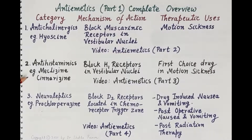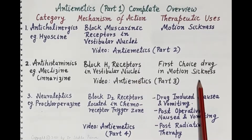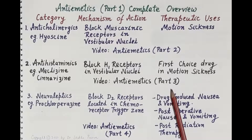The second category — antihistaminics, for example meclizine and cinnarizine — block H1 histaminic receptors in the vestibular nuclei. These drugs are the first-choice drugs in the treatment of motion sickness. Complete pharmacology of H1 antihistaminics as antiemetics can be found in the video on antiemetics part 3.